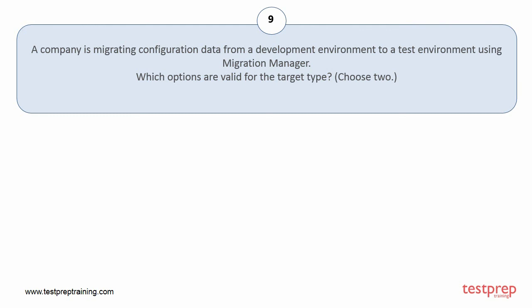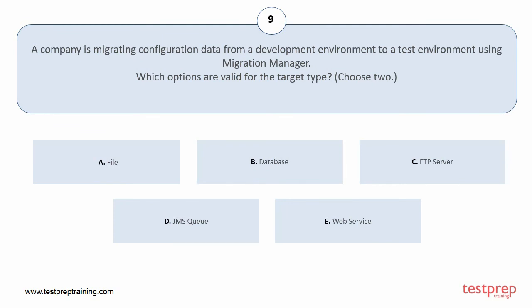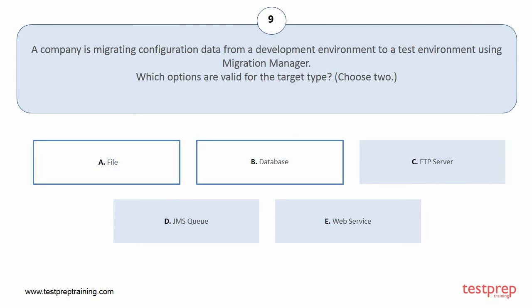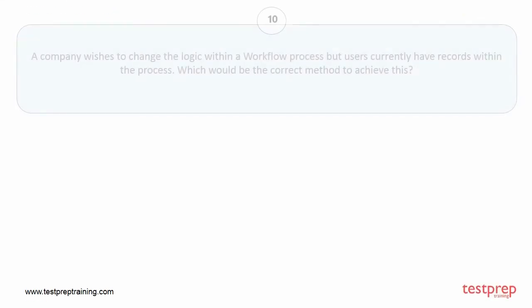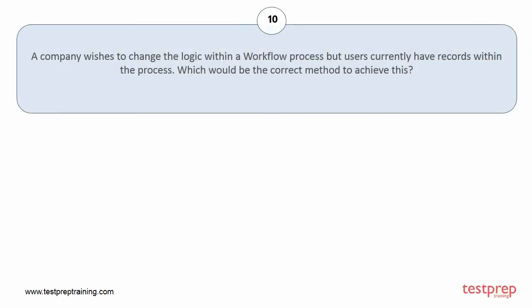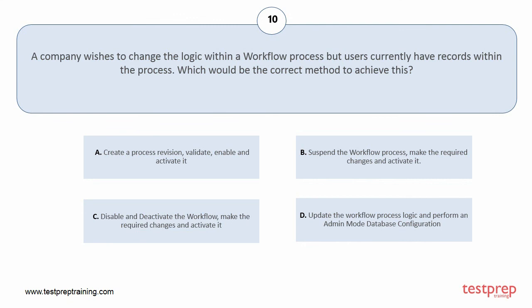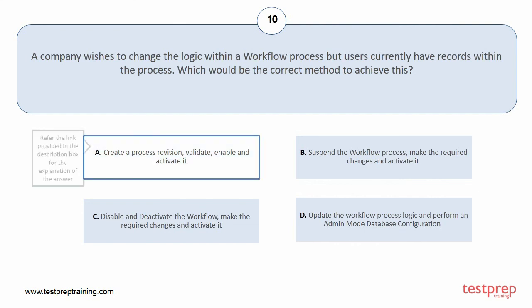Question number 9. A company wishes to change the logic within a workflow process but users currently have records within the process. Which would be the correct method to achieve this? Option A: Create a process revision, validate, enable and activate it. Option B: Suspend the workflow process, make the required changes and activate it. Option C: Disable and deactivate the workflow, make the required changes and activate it. Option D: Update the workflow process logic and perform an admin mode database configuration. The correct answer is option A.